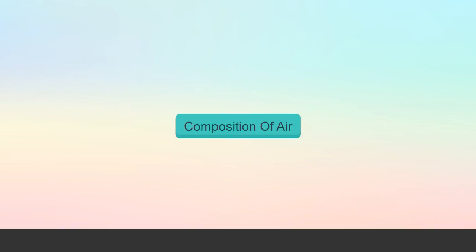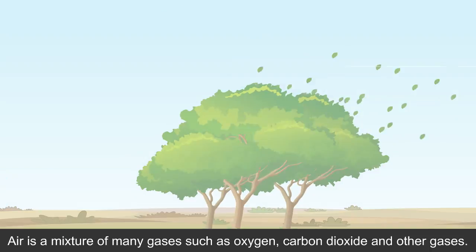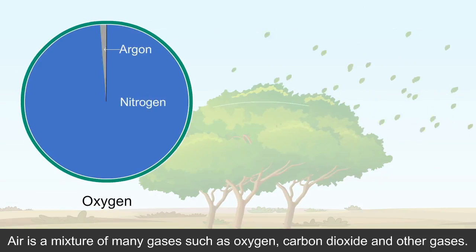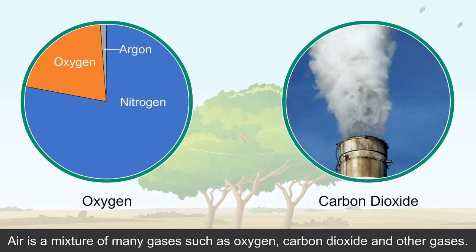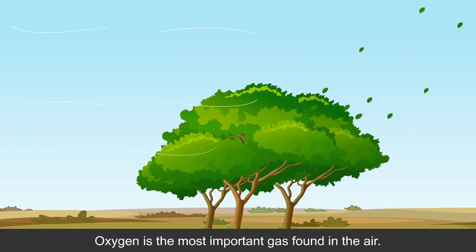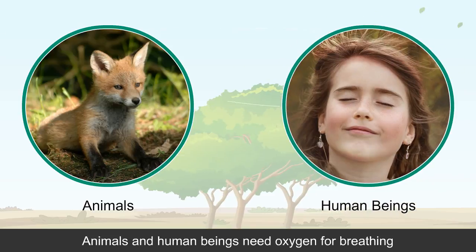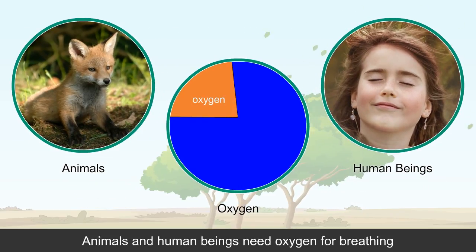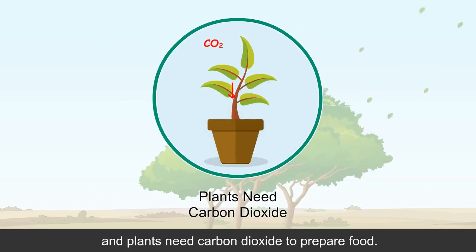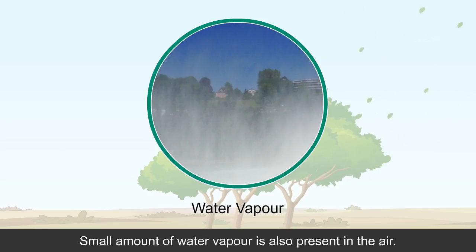Composition of air: Air is a mixture of many gases such as oxygen, carbon dioxide and other gases. Oxygen is the most important gas found in the air. Animals and human beings need oxygen for breathing, and plants need carbon dioxide to prepare food. A small amount of water vapour is also present in the air.